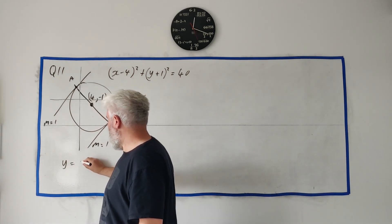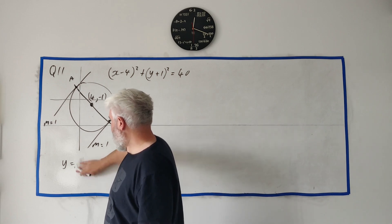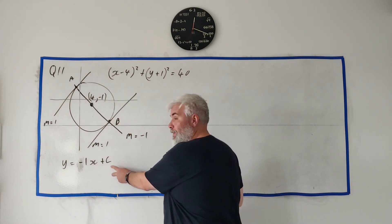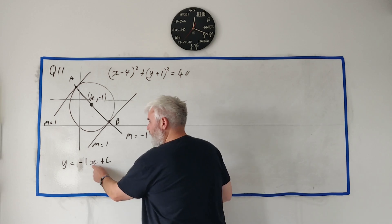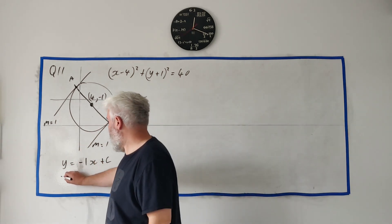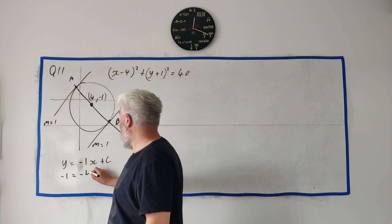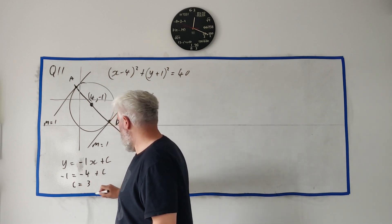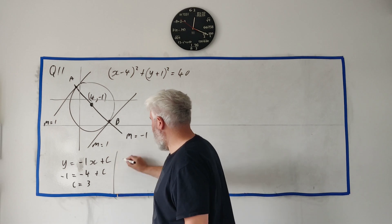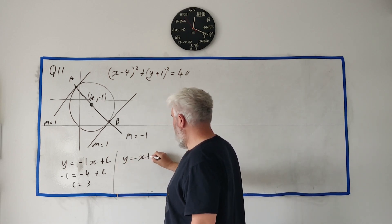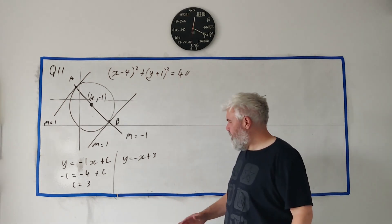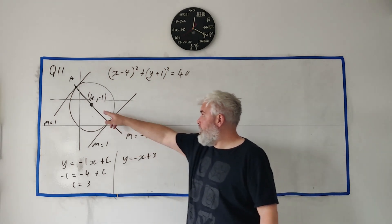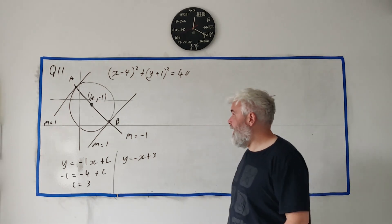Using y = mx + c, we know m = -1, so y = -x + c. Substituting the centre point (4, -1): -1 = -(4) + c, which gives c = 3. So the equation of line AB is y = -x + 3. That's all of part a — the big trick was recognising that AB passes through the centre.